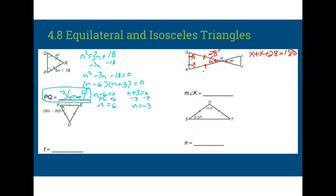So 2X plus 28 is equal to 180. 2X is equal to 152. And when I divide that by 2, then I get X is equal to 76. So the measurement of angle K is 76 degrees.